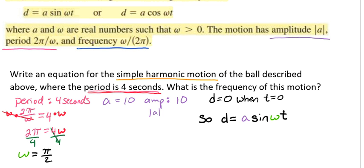So now we can plug in what we have. We have that d is going to equal 10 times the sine of π over 2t. And so this is our equation.